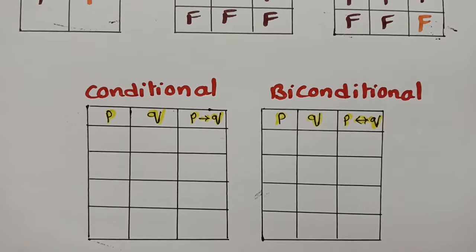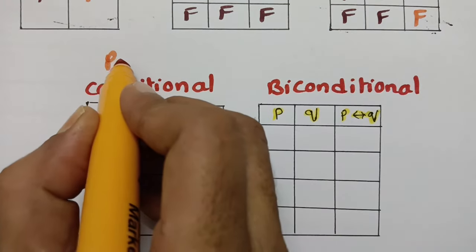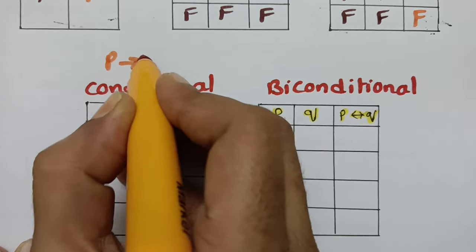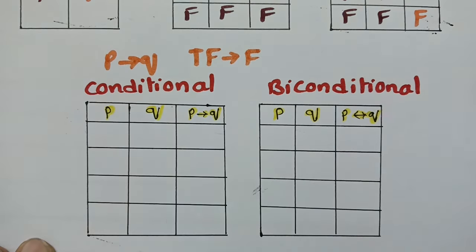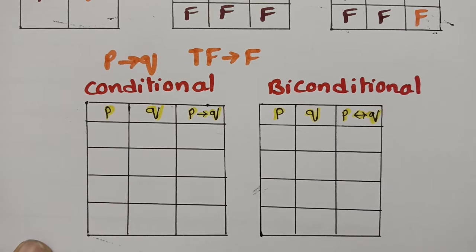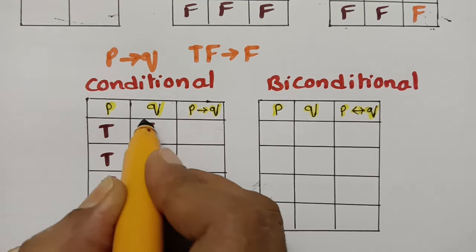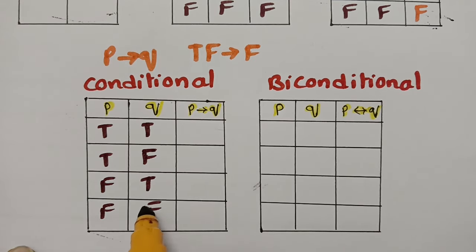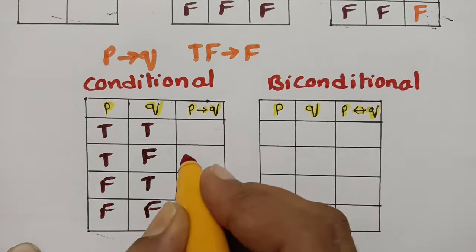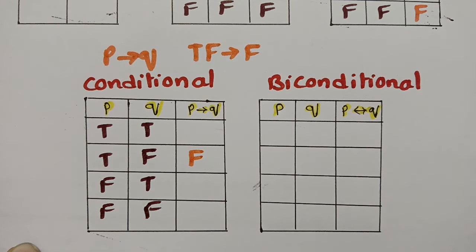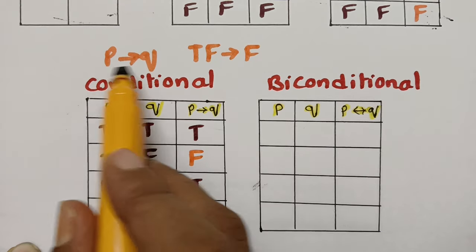Coming to the conditional statement. This is P implies Q — the symbol is P implies Q. Blindly remember: if there is true and false, immediately write false. The truth table has true, true, false, false for P and true, false, true, false for Q. For P implies Q — true and false gives false — and the rest are all opposite: true, true, true. This is the only thing to remember for implication.